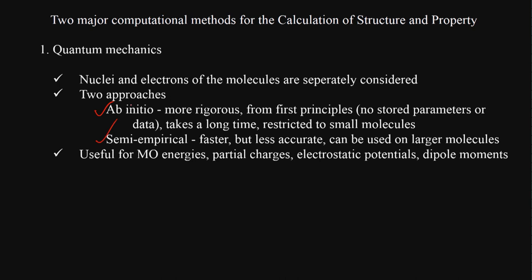The semi-empirical method is faster; a lot of parameterization has been done, and it calculates certain features using regression relationships. It is less accurate but can be used for larger molecules — hundreds of atoms. Quantum mechanics can be used to calculate molecular orbital energies, partial charges, electrostatic potentials, dipole moments, and energies required for breaking or forming bonds.